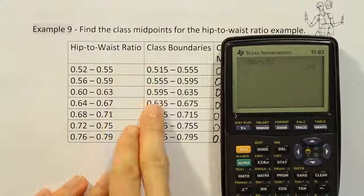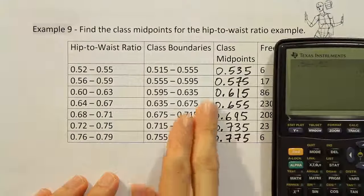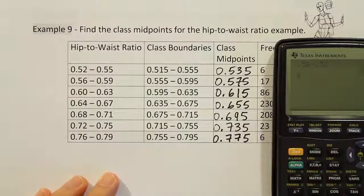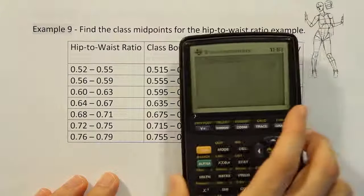That's also true for the class boundaries. It's also true for the class midpoints. We saw that the common difference is also the same throughout. That common difference is referred to as the class width.